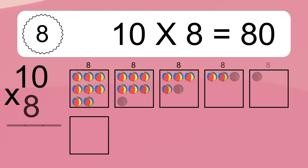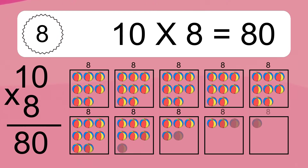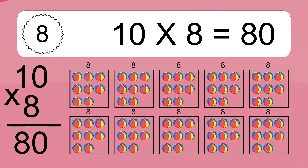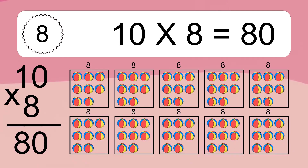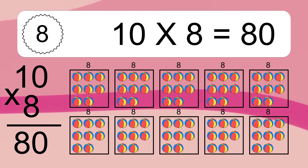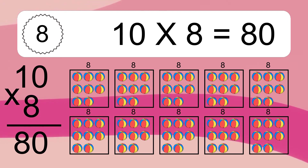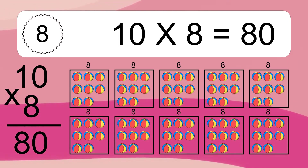Ten times eight equals 80. We have 10 boxes and each box has 8 colorful balls inside. If you count all the balls in all the boxes together, you will have 10 times 8 balls. This equals 80 balls.